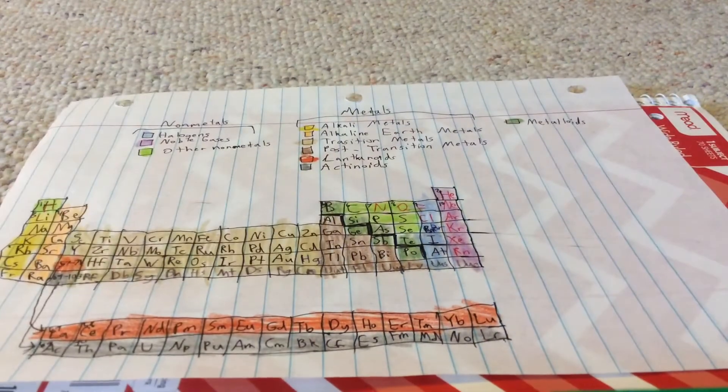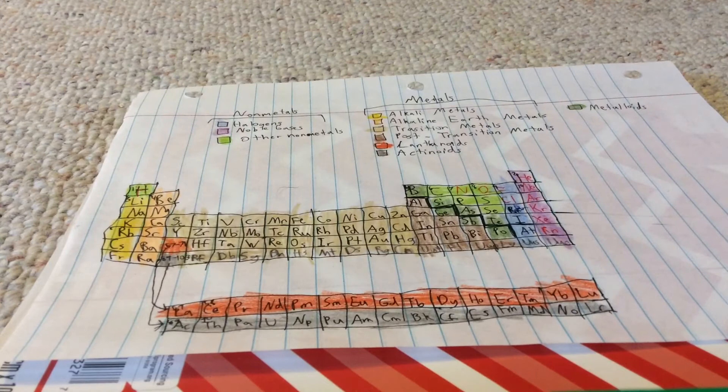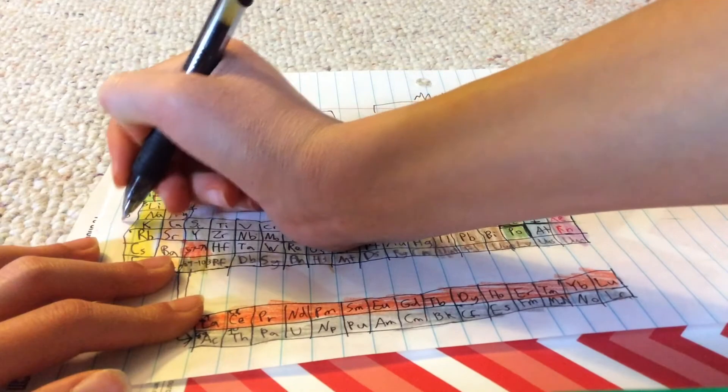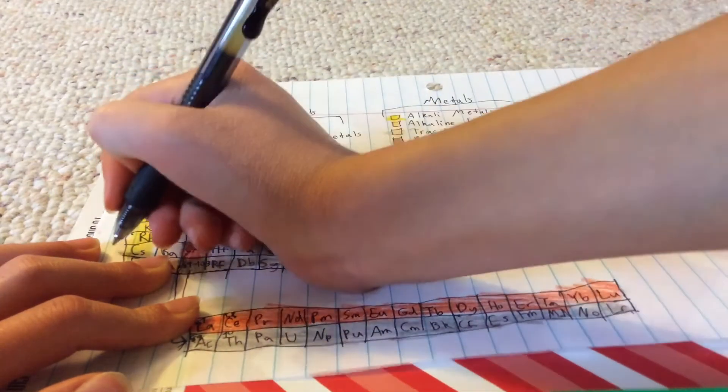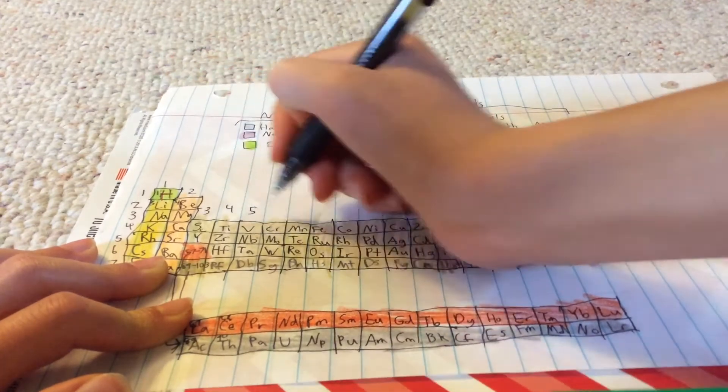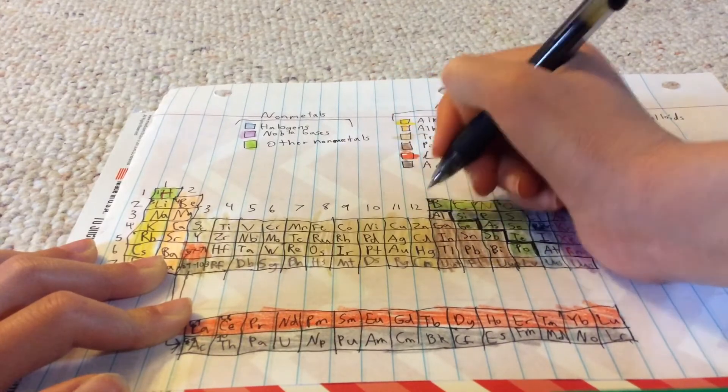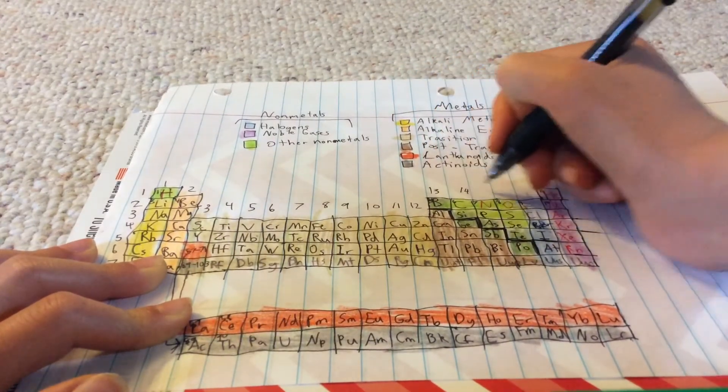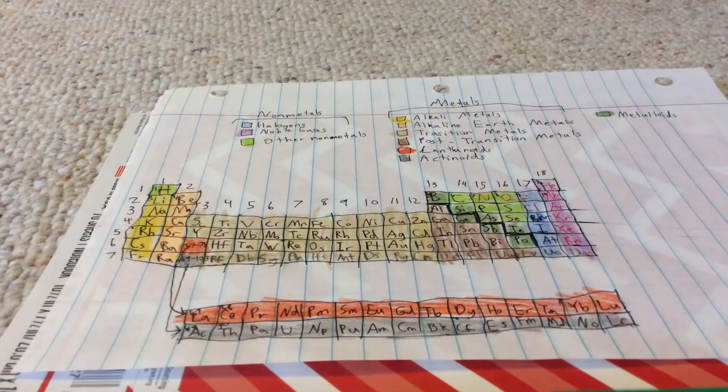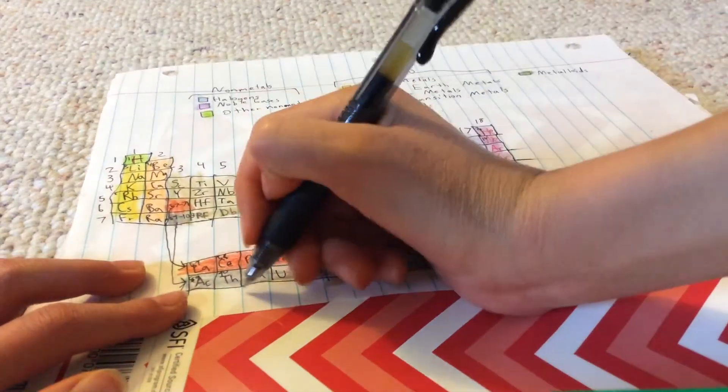You can see those are the... this is not done, not yet complete. Still need to label all the periods and the families: one, two, three, four, five, six, seven; one, two, three, four, five, six, seven, eight, nine, ten, eleven, twelve, thirteen, fourteen, fifteen, sixteen, seventeen, eighteen. You can see it is complete. The periodic table is complete, and yes.